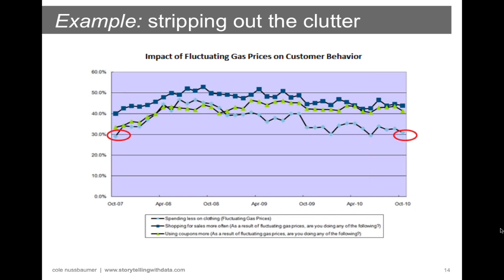The final Gestalt principle is connection — people tend to think of objects physically connected to one another as belonging to the same group. The associative property of connection is stronger than like colors or like shapes, though typically not stronger than enclosure. We frequently use the connection principle in line graphs to make sense of the dots we plot. Now, to make the Gestalt principles more practical, I'd like to walk through a specific example of stripping out clutter. The graph we're looking at is the impact of fluctuating gas prices on customer behavior.